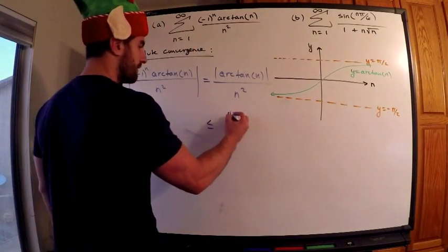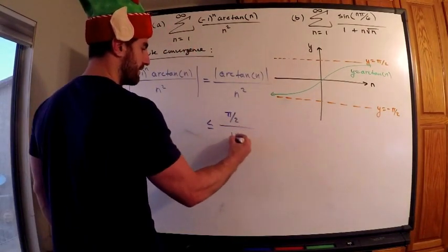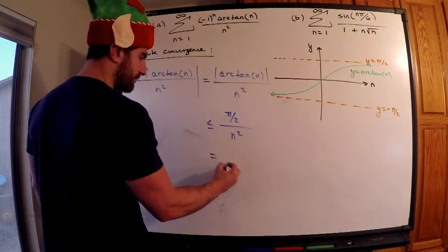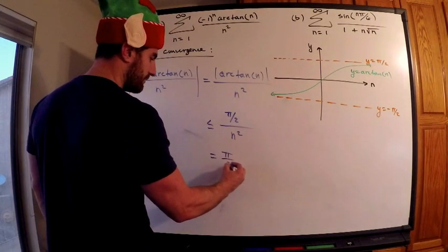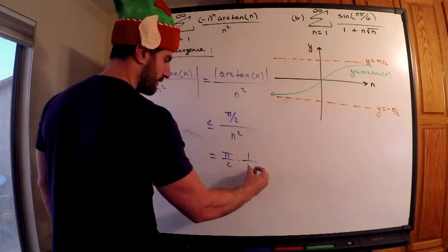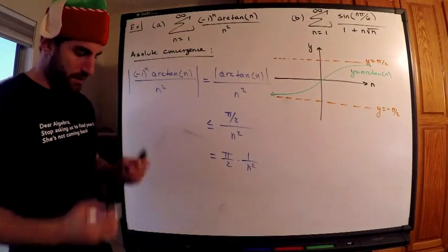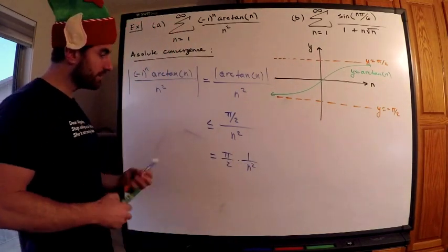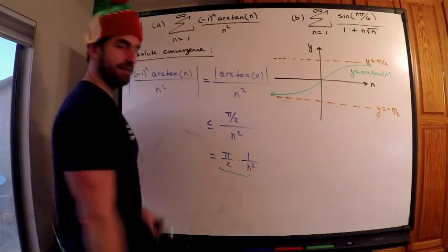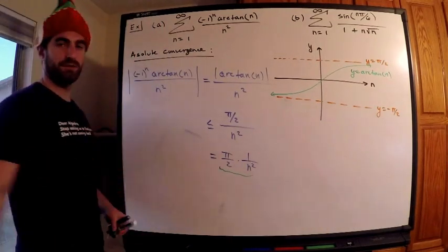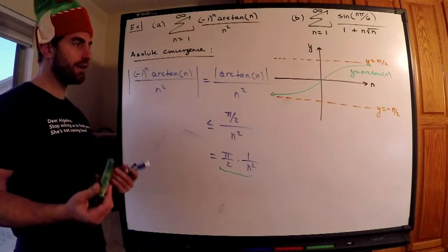So this is less than or equal to pi over 2 divided by n squared. All right. So this is equal to pi over 2 times 1 over n squared. Do we know anything about this? Do we know anything about this? In terms of convergence, we absolutely do because that converges, right? My conclusion follows. I even need to write it.